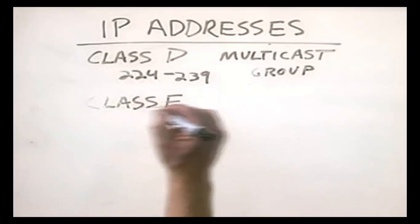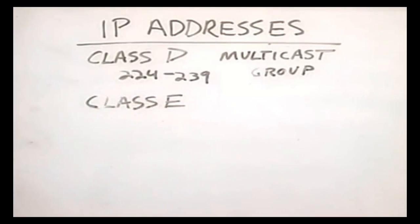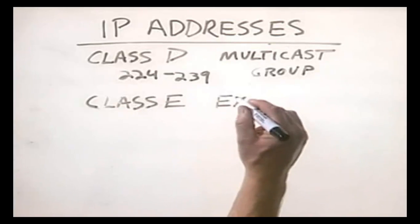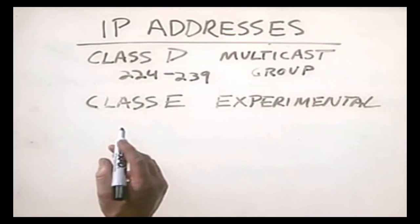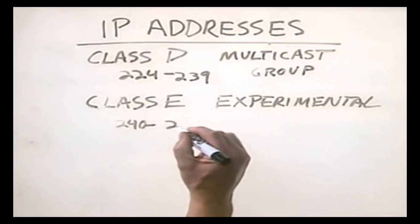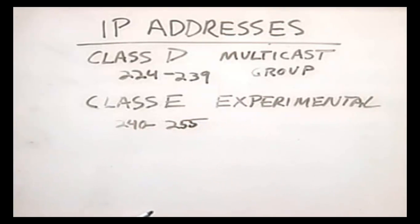Then we have class E IP addresses. You probably won't do a whole lot with class E's — these are just experimental. The value of the first octet of a class E address is between 240 and 255. That's it for this lesson. We talked about the role of TCP/IP addresses, the fact that an IP address is composed of the host and logical network addresses together, the role of the subnet mask, and the five different classes of IP.